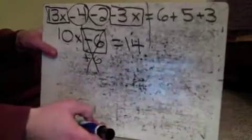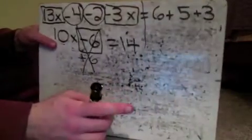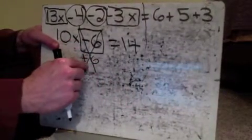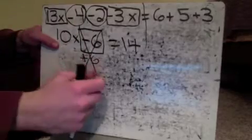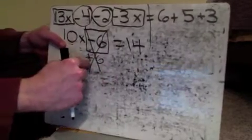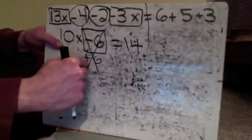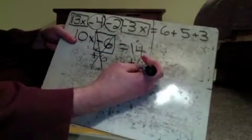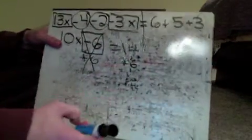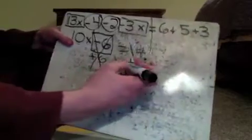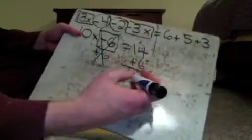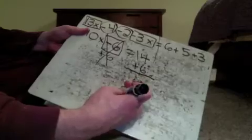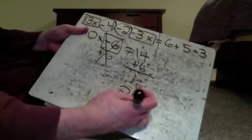Canceled out. Now the thing is, if I do this to one side, remember you've got to do it to the other side. So if I did plus 6 over here, I've got to do plus 6 over here as well. When I do this plus 6, 14 plus 6 is now 20.